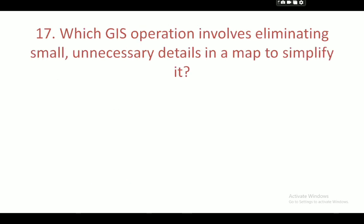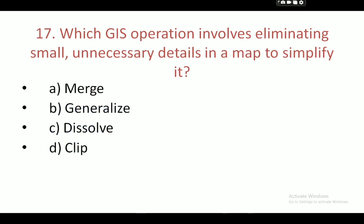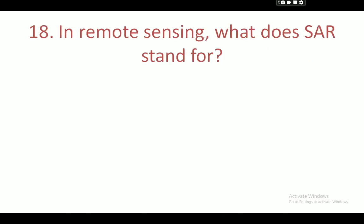Next question: which GIS operation involves eliminating small unnecessary details in a map to simplify it? Your options are: merge, generalize, dissolve, and clip. Your correct answer is generalize.